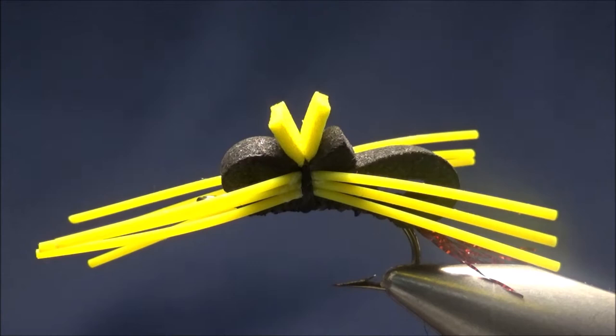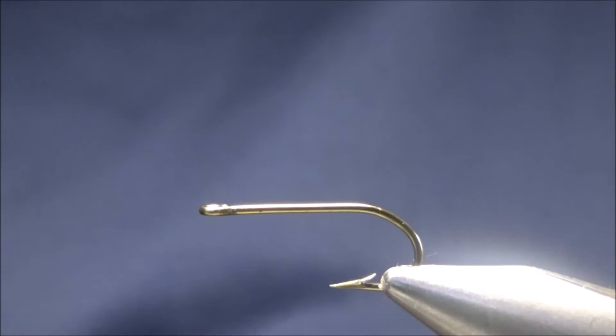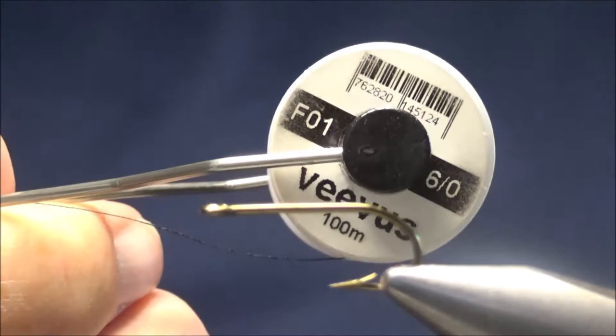Joe ties this in a size six. I like to tie it in a size eight, and what I've got in the vise is a Mustad 33660 size eight hook. I find that even small bluegill have no problems taking this pattern. The thing I like about it with the size eight hook is very rarely are they able to swallow it. For thread, I'm going to be using some Veevus 6.0 in black.